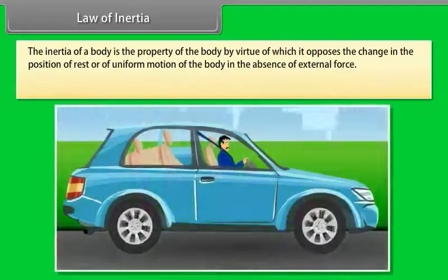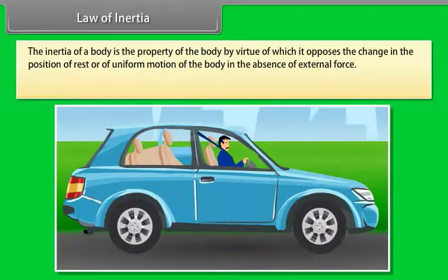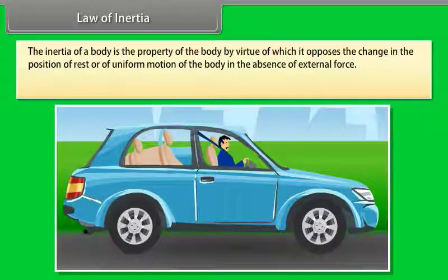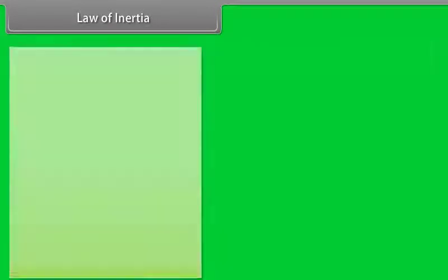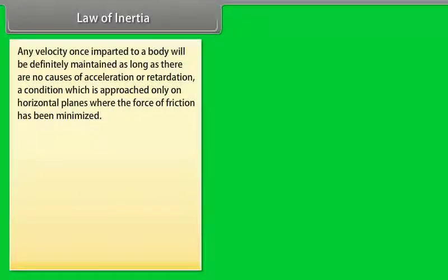Law of Inertia: The inertia of a body is the property of the body by virtue of which it opposes the change in the position of rest or of uniform motion of the body in the absence of external force. Inertia of a body is directly proportional to its mass. Any velocity once imparted to a body will be maintained as long as there are no causes of acceleration or retardation, a condition approached only on horizontal planes where friction has been minimized.